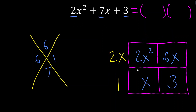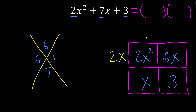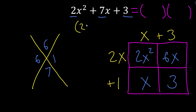Instead of taking the GCF out of every single row and column, we could just do it for one row, then use multiplication thinking to find the rest. The area is 2x², this side length is 2x, so what needs to go here? Whatever I multiply 2x by to get 2x² — that's just x. What do I multiply x by to get x? That's 1. What do I multiply 1 by to get 3? That's 3. That's the approach I prefer. So our final factored form is (2x + 1)(x + 3) — that's how we do the Xbox method.